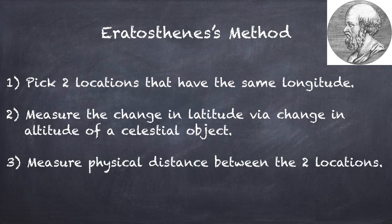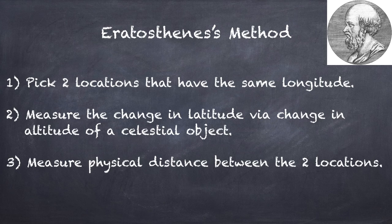And finally you measure the physical distance between the two locations. With these three pieces of information, you can measure the radius or the circumference of the Earth.